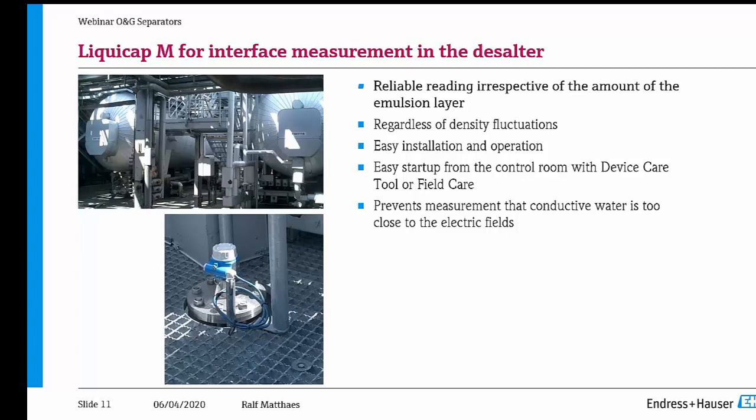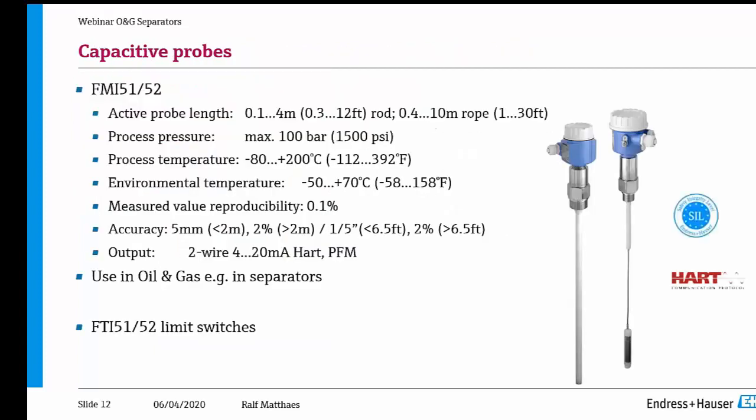It can be used as a reliable measurement but it only works well for high API requirements — no big emulsion layer, otherwise emulsion is quite conductive and in electrostatic desalters this would cause issues. Having a look at the physical limitations: active length is up to 4 meters for a rod version or up to 10 meters for a rope version, and process pressure up to 100 bar.